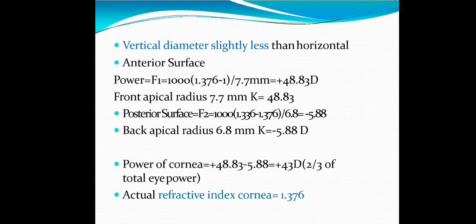Posterior surface F2 = 1000(1.336 - 1.376) / 6.8 mm = -5.88 D. Back apical radius is about 6.8 mm with keratometry K = -5.88 D.